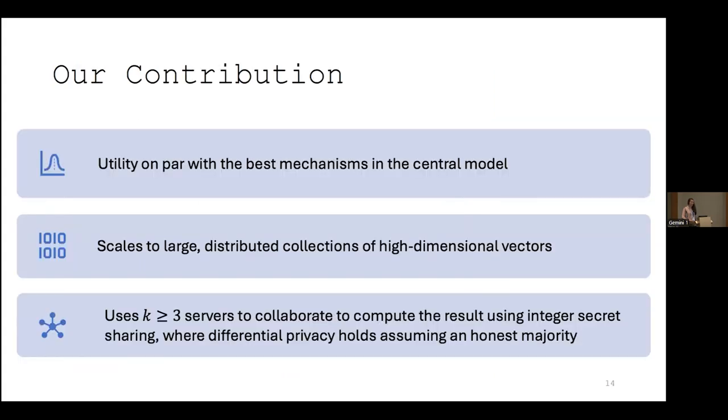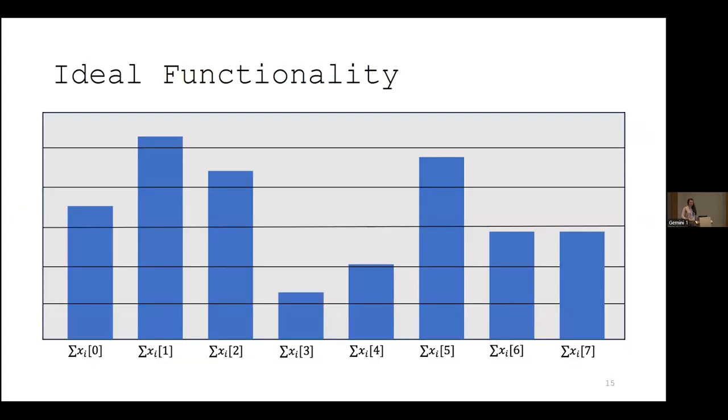Our contribution then is this differentially private and distributed selection protocol that gives utility on par with the best mechanisms in the central model of differential privacy that scales to large data sets with high dimensions and uses three or more servers using an integer secret sharing scheme to give differential privacy for an honest majority. Before going into the details of how this can be implemented as a cryptographic protocol, I'll first give a high level overview of the ideal functionality, or you can think of this as the mechanism or algorithm we're using.